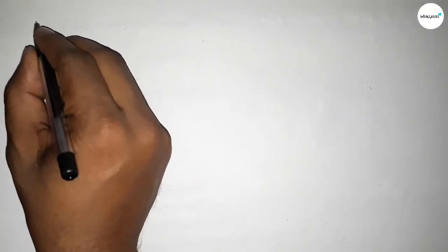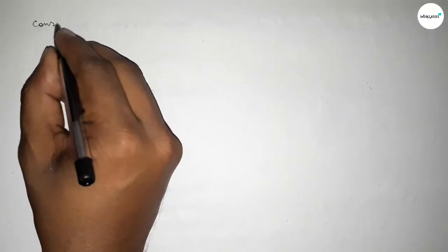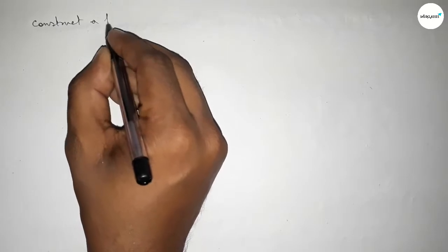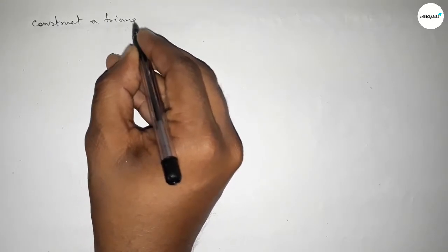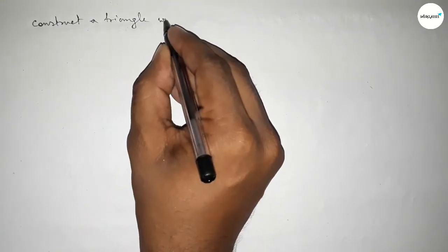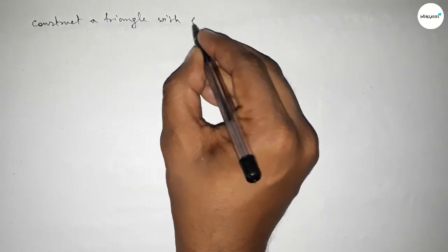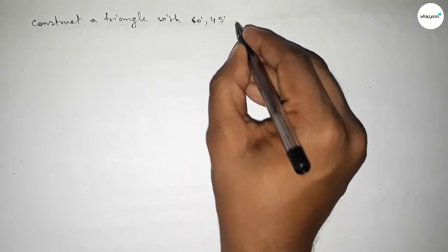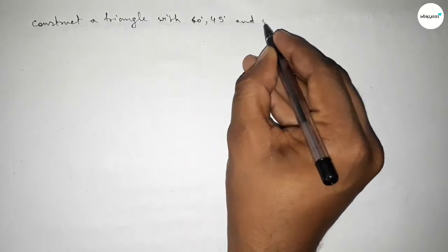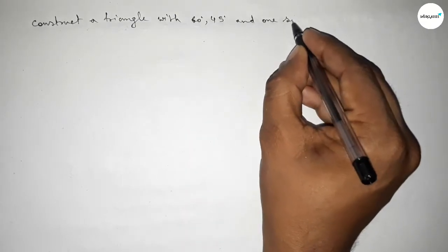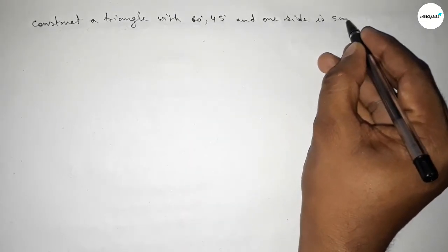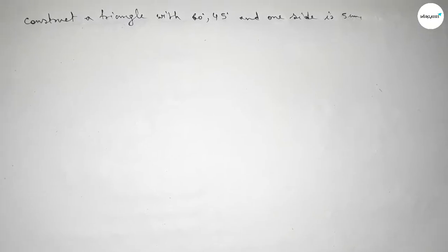Hi everyone, welcome to SISR classes. Today in this video we have to construct a triangle with two given angles — 60 degrees and 45 degrees — and one side equal to 5 centimeters. So let's start the video.